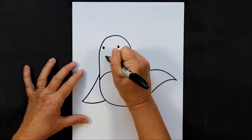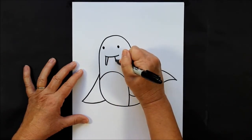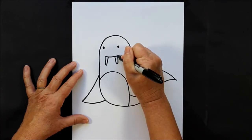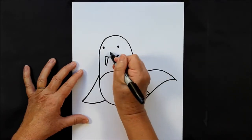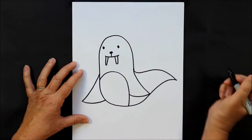So his tusks are kind of long, but they are also rounded at the end, just like this, with a little nose, and a line coming down from the nose.